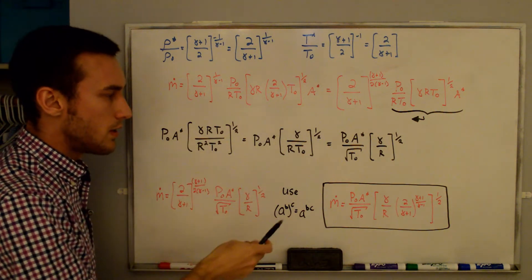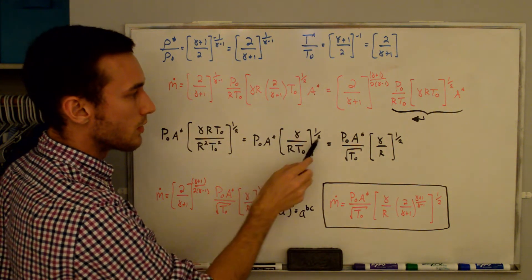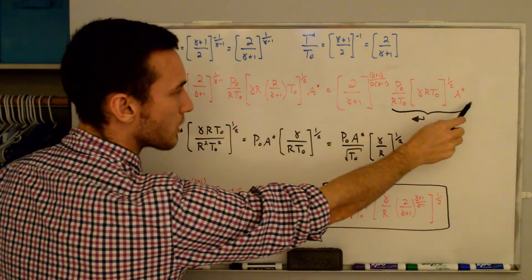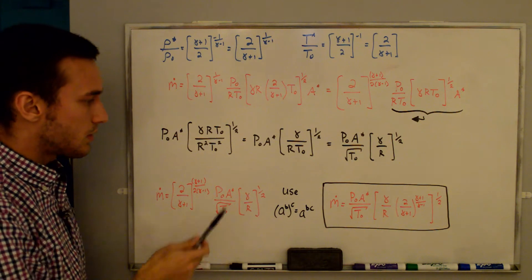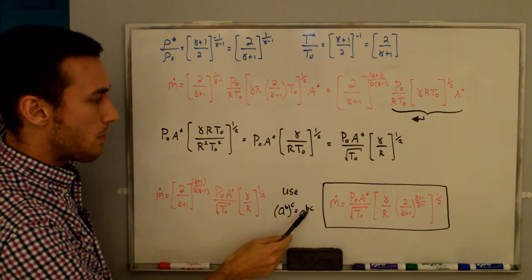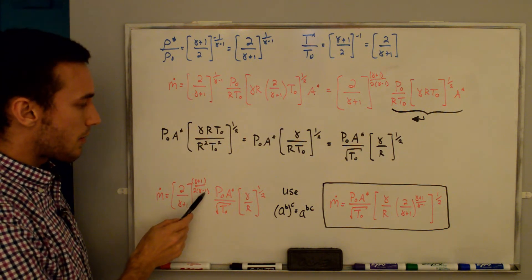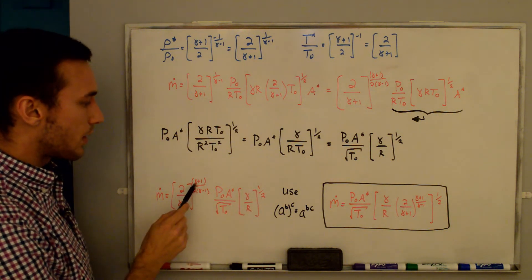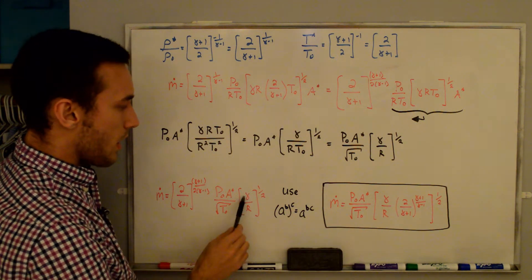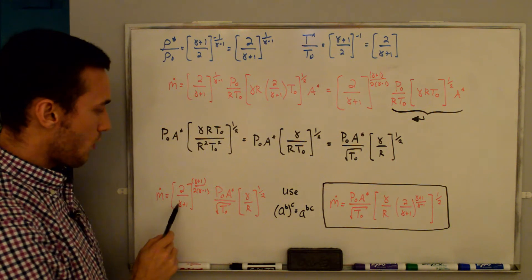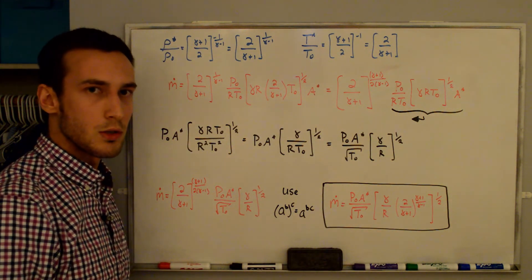Applying the rule (A^B)^C = A^(BC) to pull the (2/(γ+1)) term into the overall square root — since its exponent (γ+1)/[2(γ−1)] already contains a factor of 1/2 — we arrive at the final form: ṁ = (P₀ A*/√T₀) × [γ/R × (2/(γ+1))^((γ+1)/(γ−1))]^(1/2). This is the final form of the mass flow rate through a choked converging or converging-diverging nozzle.